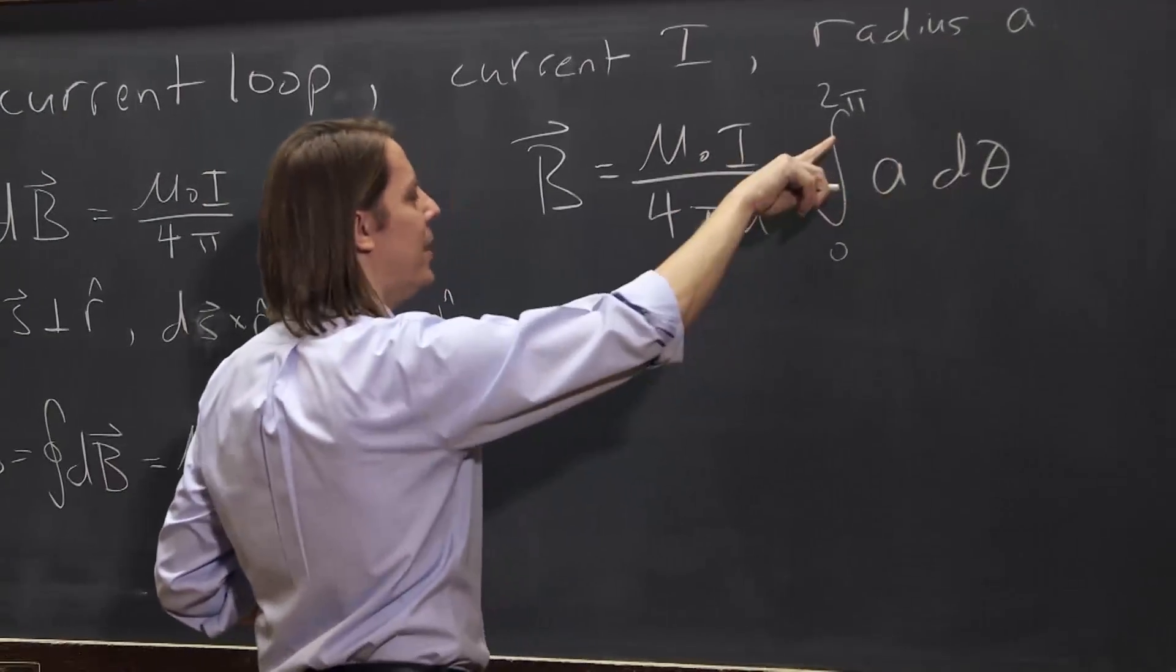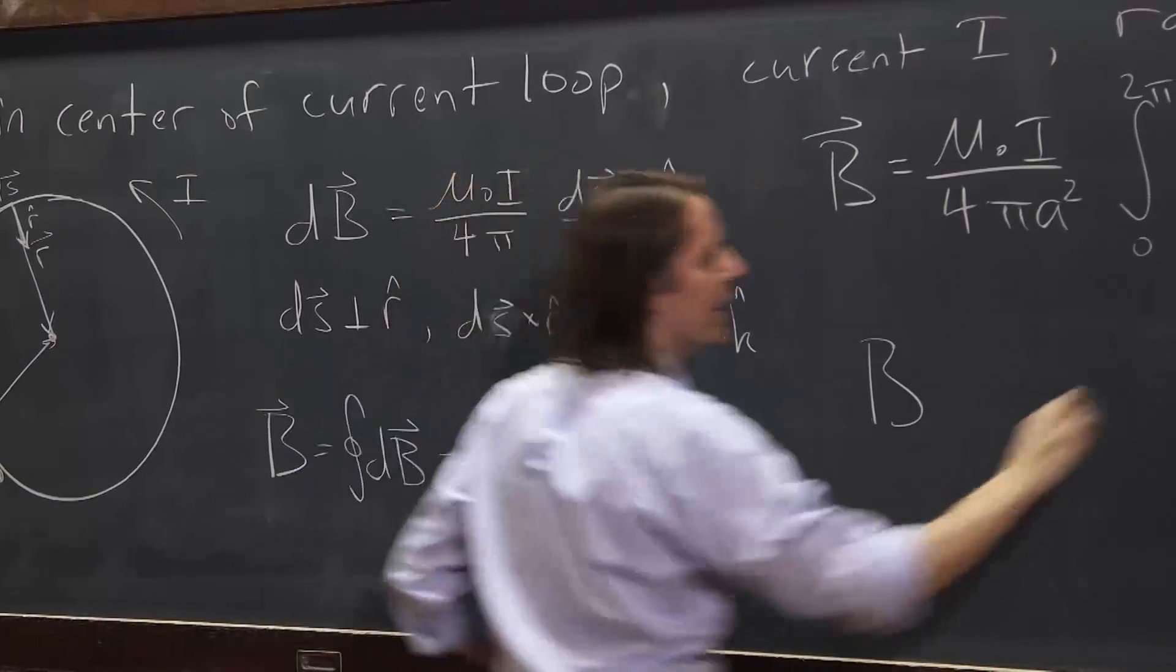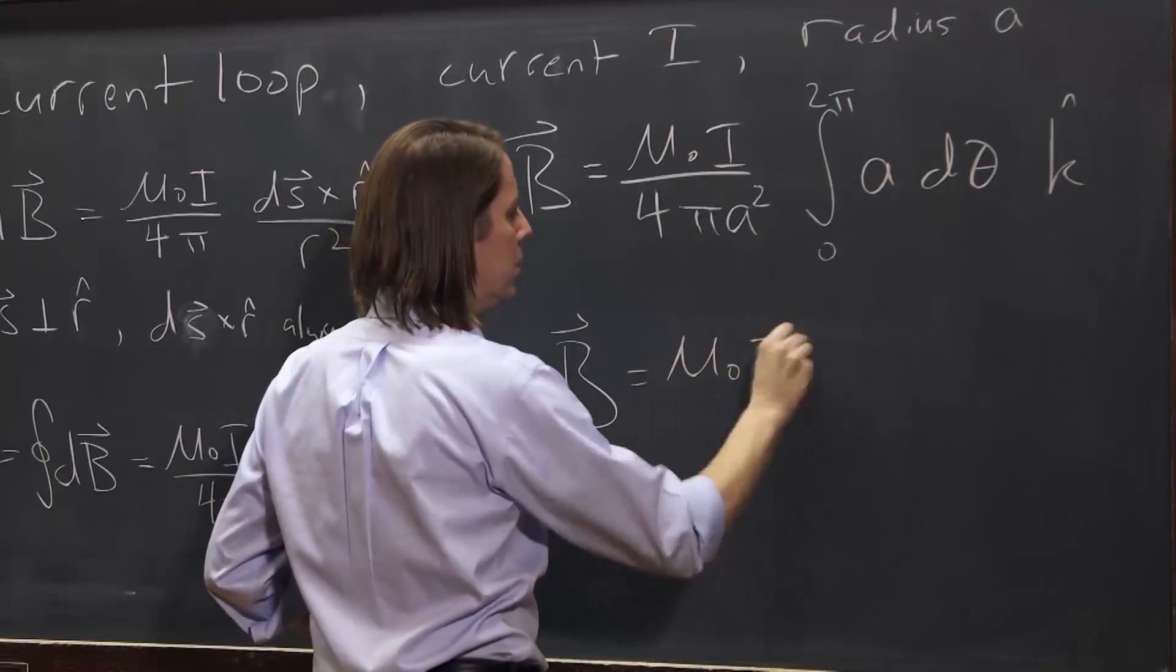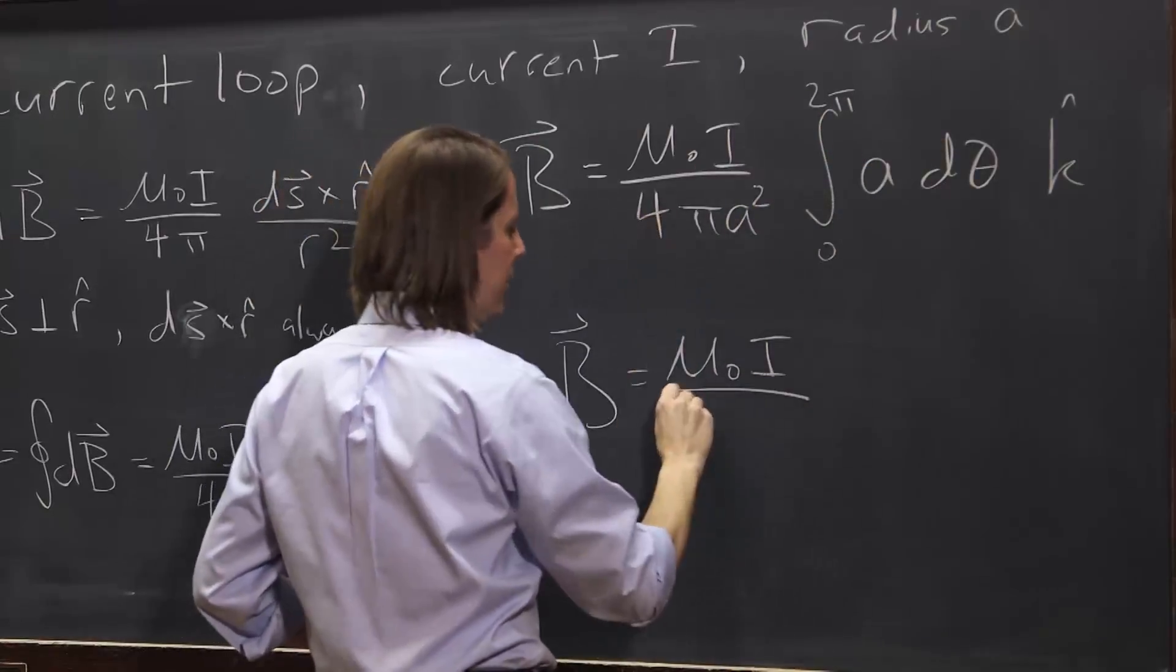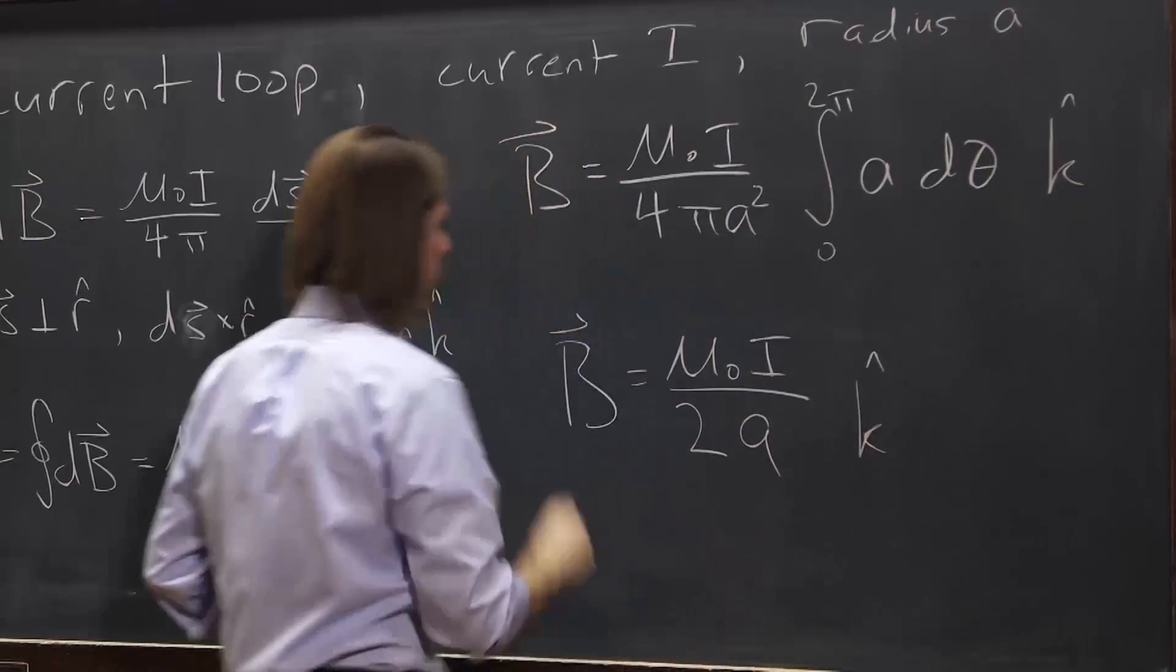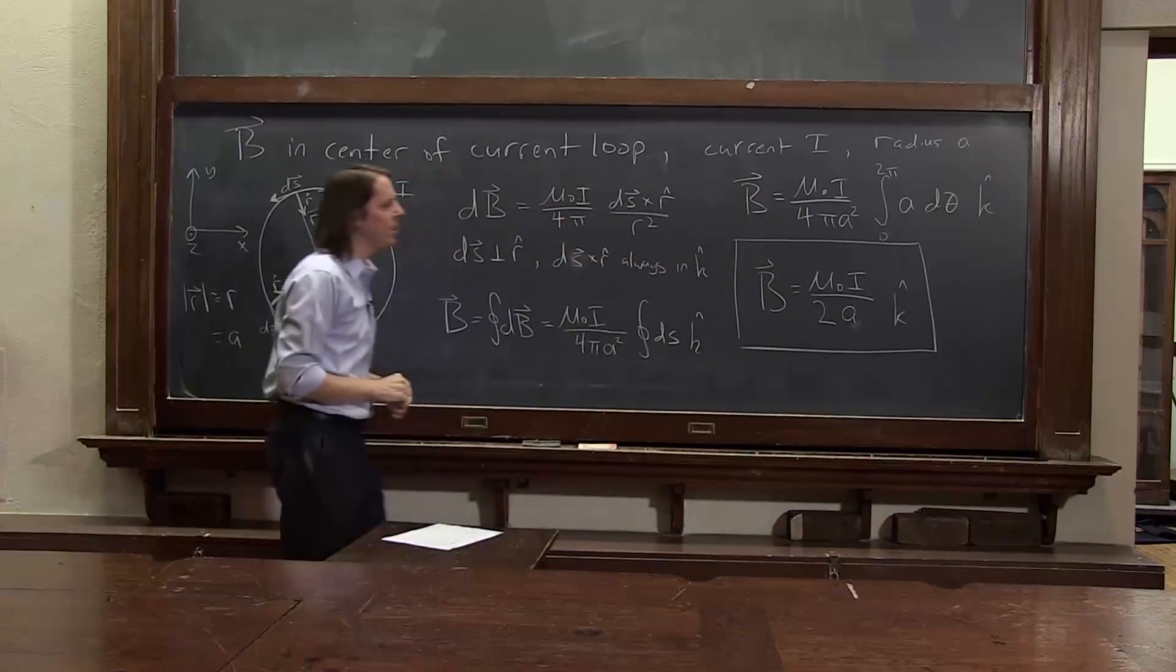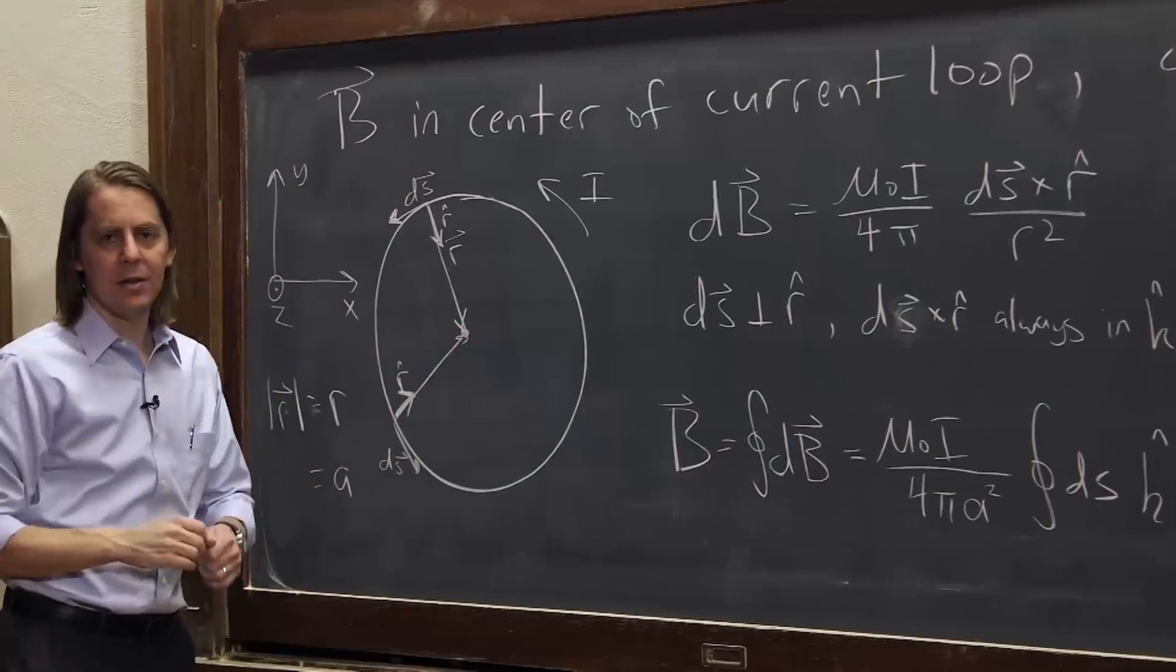Either way you do it, a 2πa ends up in the top, and its direction is k hat. So either way you do it, you get a B that's μ₀I, 2π times a, that a is going to cancel. So there's no a in the top, and the 2 from there cancels that 4 into a 2, and the π's cancel. This π cancels that π, and you're left with that. So you get that the B field at the center of the loop, the current loop, is μ₀ times I over 2 times the radius of the loop. And that's only in the center. And it sticks out in the k direction.